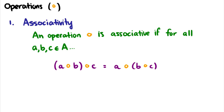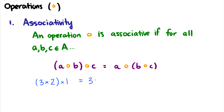An operation is associative if for every a, b, and c in a set A, doing (a ∘ b) ∘ c is the same as a ∘ (b ∘ c) — the way we group them doesn't change the output. For instance, multiplication: (3 × 2) × 1 = 6 × 1 = 6, and 3 × (2 × 1) = 3 × 2 = 6. So multiplication is associative in the real numbers and integers. We've seen associativity before in propositional logic and set theory.